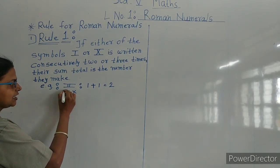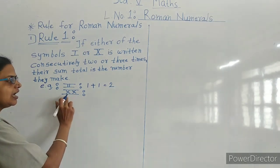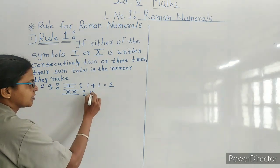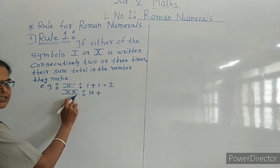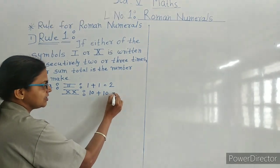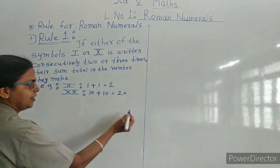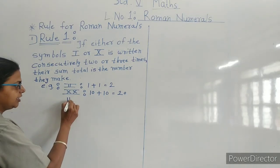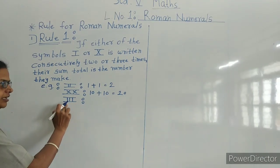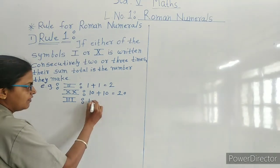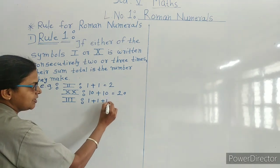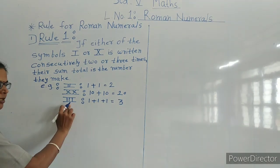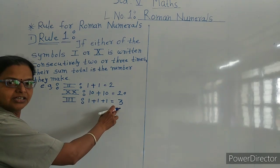Double X: X is the symbol used for 10, so 10 plus 10 is equal to 20. Double X means 20. Triple I: I means 1, so 1 plus 1 plus 1 is equal to 3. Triple I means 3.